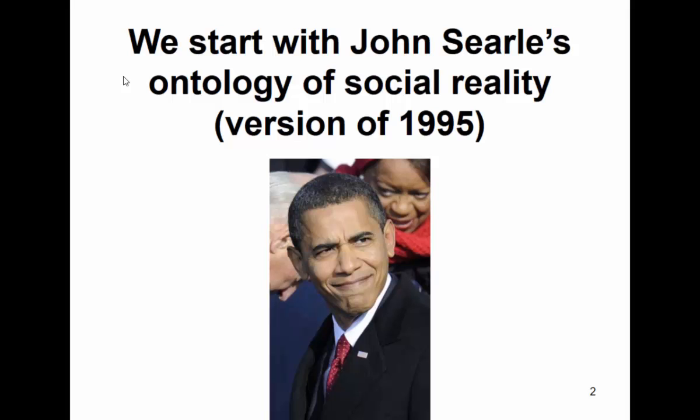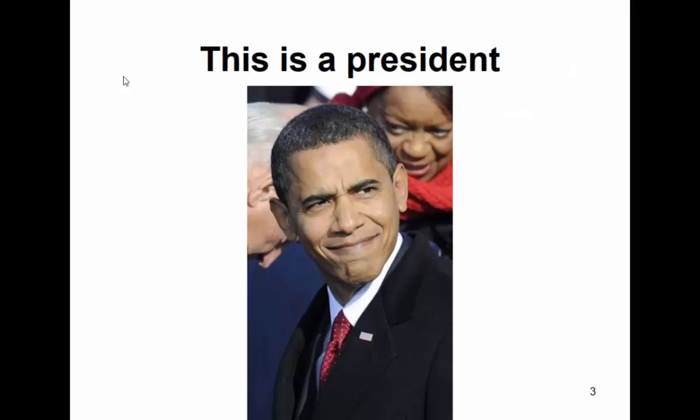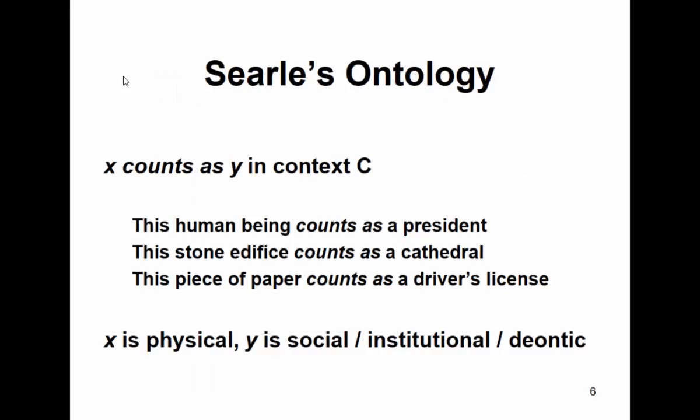You've heard some of this, but I'm going to give you a pocket version of what you've heard already. So this is a president, this is a cathedral, this is a driver's license, and these are all social objects. Searle, in his earlier book on social ontology, The Construction of Social Reality, has an account of such social objects, which is the X counts as Y in C account. It works amazingly well for presidents, cathedrals, driver's licenses, and also for dollar bills.